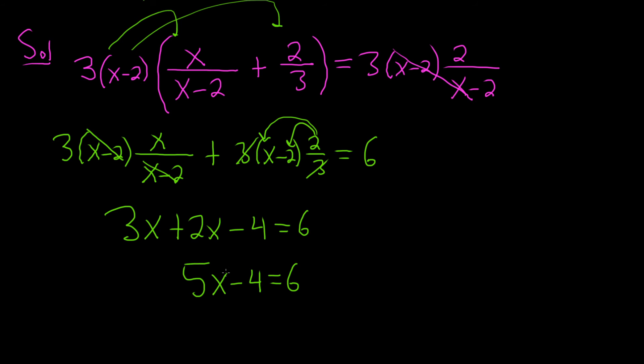To finish solving for x, we can just add 4 to both sides. So we have 5x equals 10. And then we can divide by 5, and that should give us x equals 2.